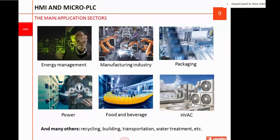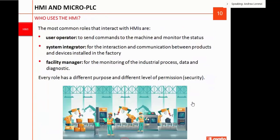It is a very common product, especially in the world of Industry 4.0, and it allows interaction between the machine and the operators to optimize the industrial process. There are a very big amount of application sectors: energy management, manufacturing industry, packaging, power industry, food and beverage, HVAC, and many others. HMIs are typically used by user operators to command the machine directly from the touchscreen, by system integrators to allow communication between products and devices in the factory, and by facility managers to have complete monitoring of the industrial process and perform diagnostics.